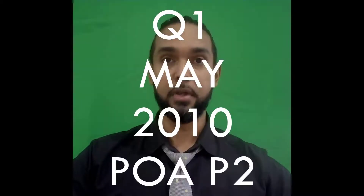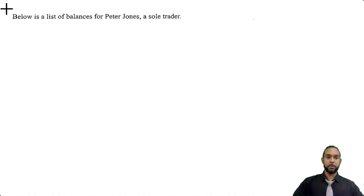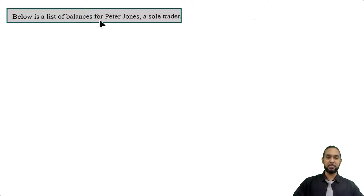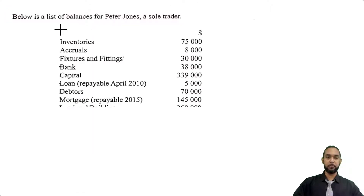Hey guys, Chris from Adaptivation here. In this video I'm going to show you the solution for question 1 from the May 2010 POA paper 2. If you want to see the solutions to the other questions on this paper, I'm going to put a card up there and the link in the description below. The question tells us that below is a list of balances for Peter Jones, a sole trader.